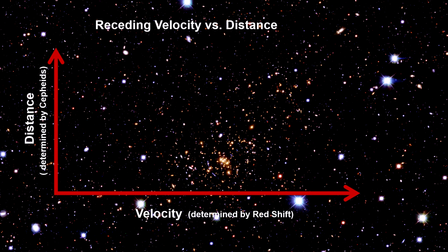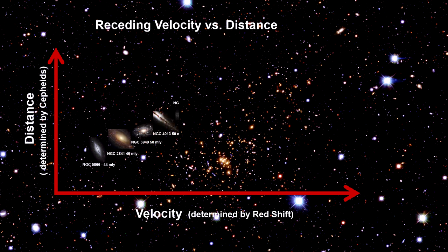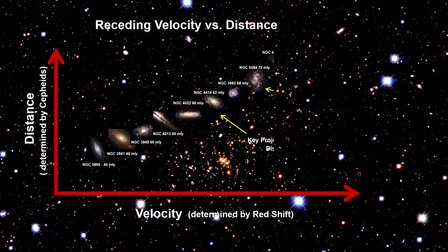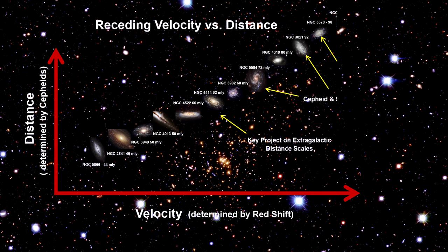Then in 1929, Edwin Hubble published his studies of galactic velocities. He found that except for a few nearby galaxies, all the spectral shifts were to the red — all of them were moving away from us. Looking at galaxies in our Virgo supercluster out to 100 million light years, he discovered that the universe was expanding away from us.